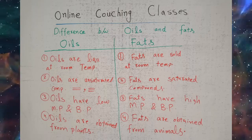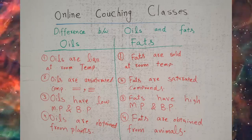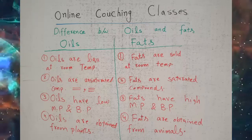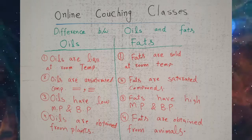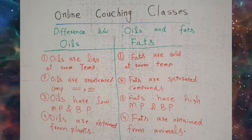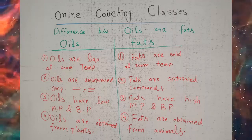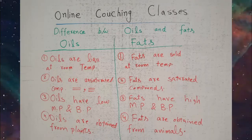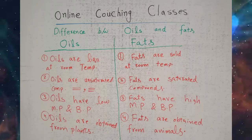Fats are solid at room temperature. Difference two: oils are unsaturated compounds, meaning these compounds have double bonds or triple bonds, like alkenes or alkynes. Fats are saturated compounds — fats have single bonds.